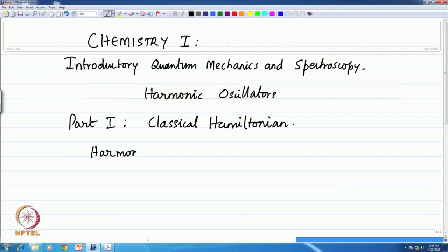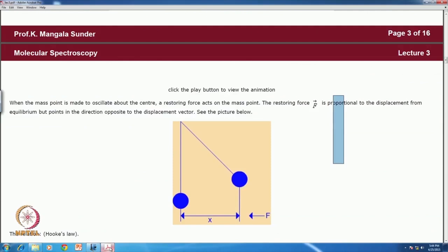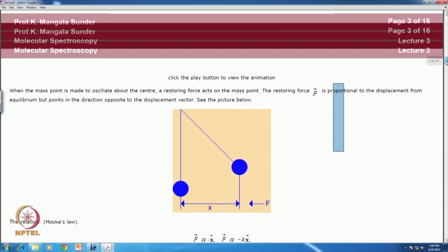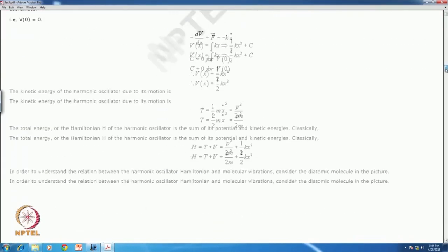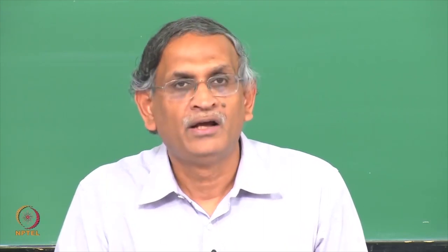Let me write down harmonic motion: small amplitude oscillation about equilibrium. If you want to visualize that, here are some simple pictures. These are some examples of what is meant by a small amplitude vibration or oscillation about an equilibrium position.